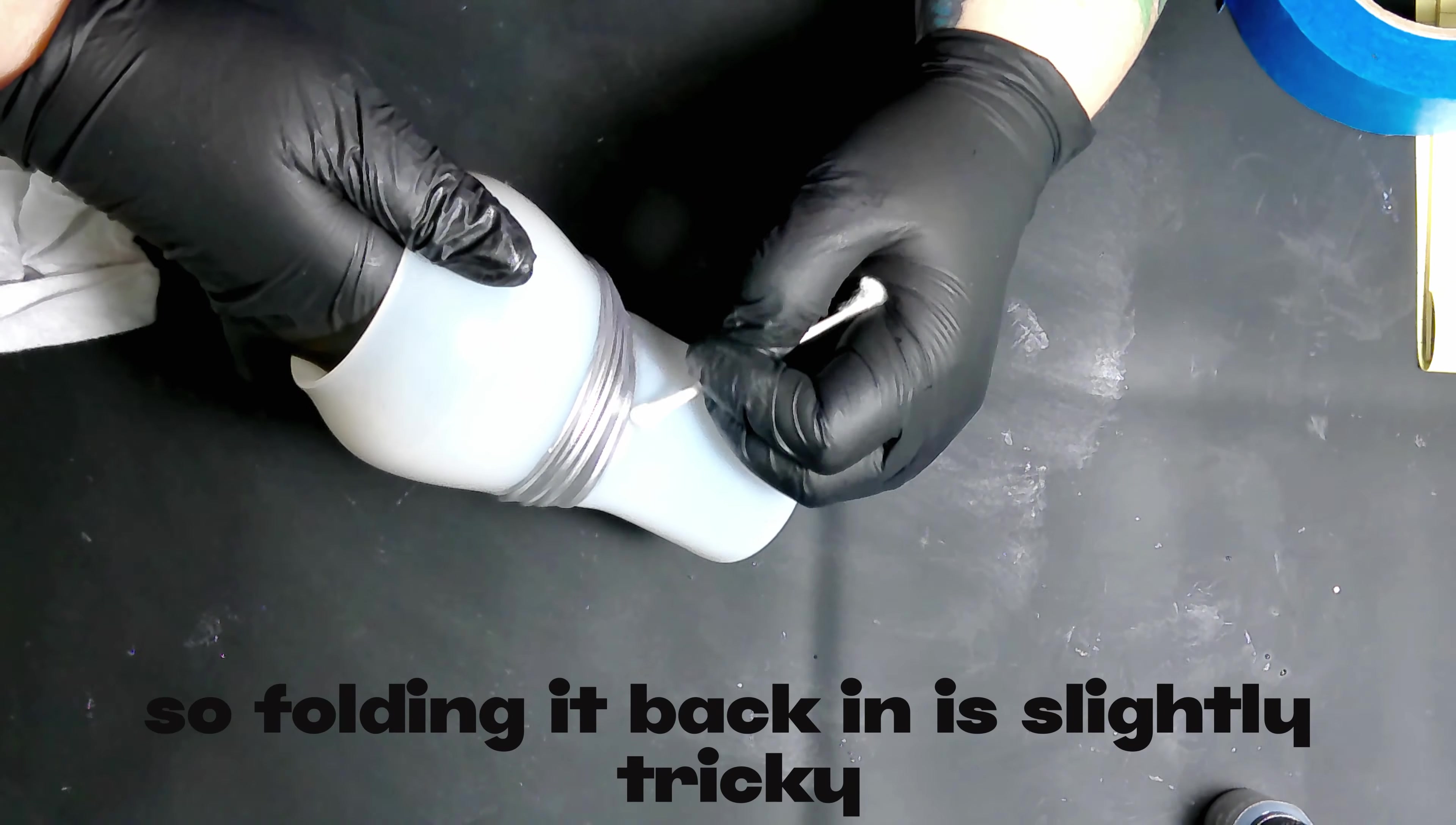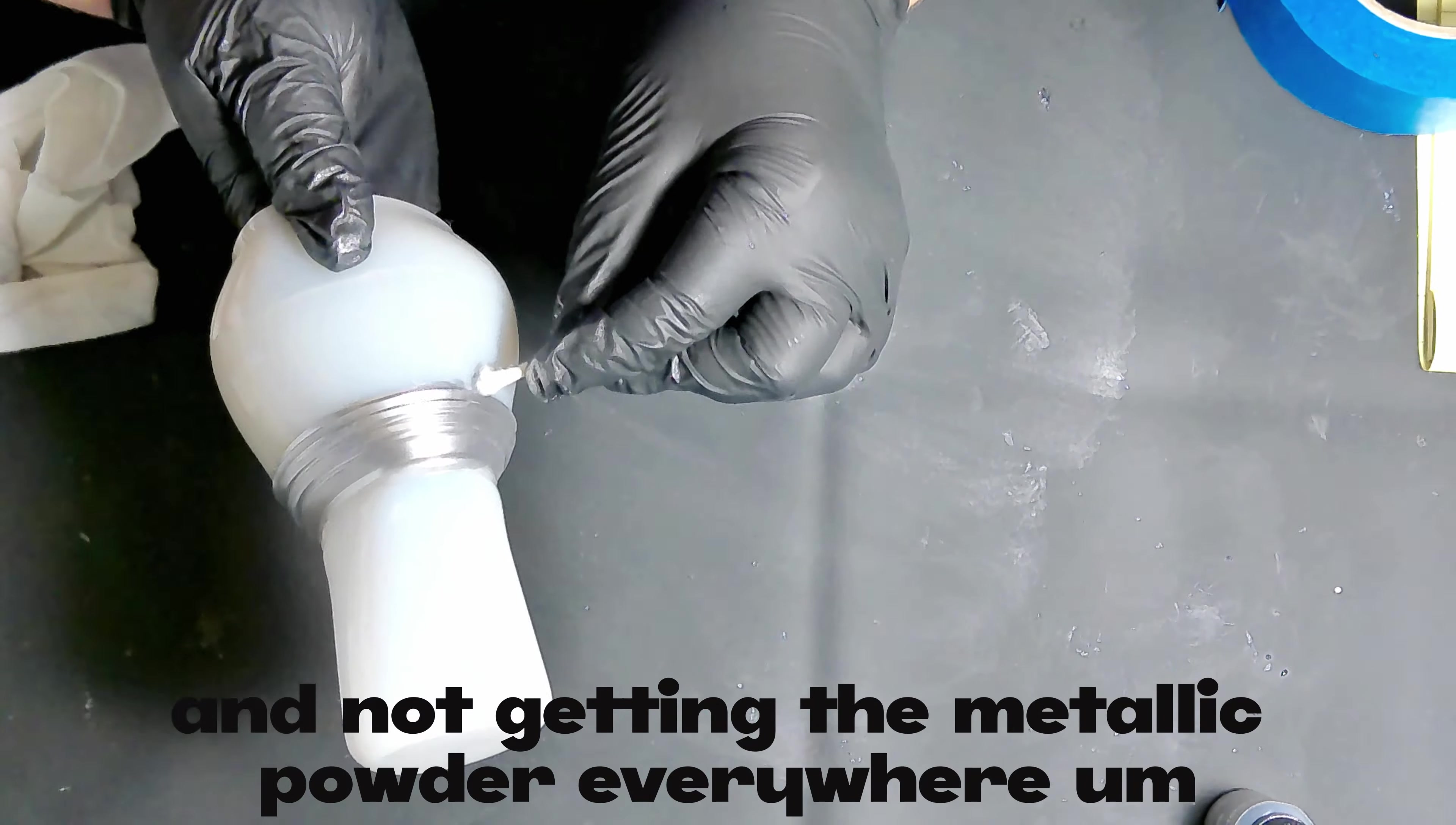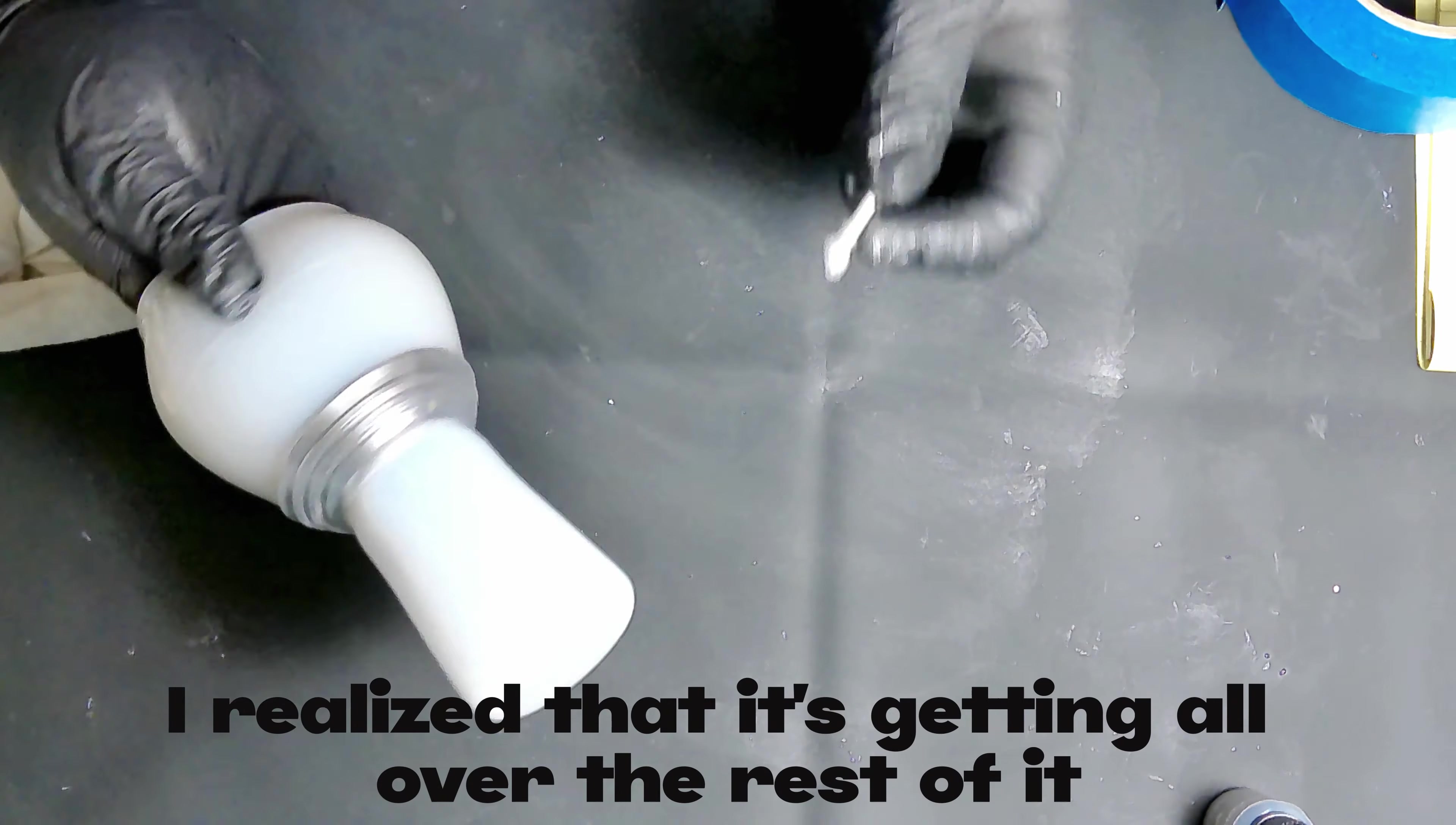So folding it back in is slightly tricky, not the actual action in itself of folding it in, but folding it in and not getting the metallic powder everywhere. So as you'll see here in a second, I do it and then kind of stop because I realized that it's getting all over the rest of it. And like I said, I really don't want it all over the place. I just want it in this particular area.